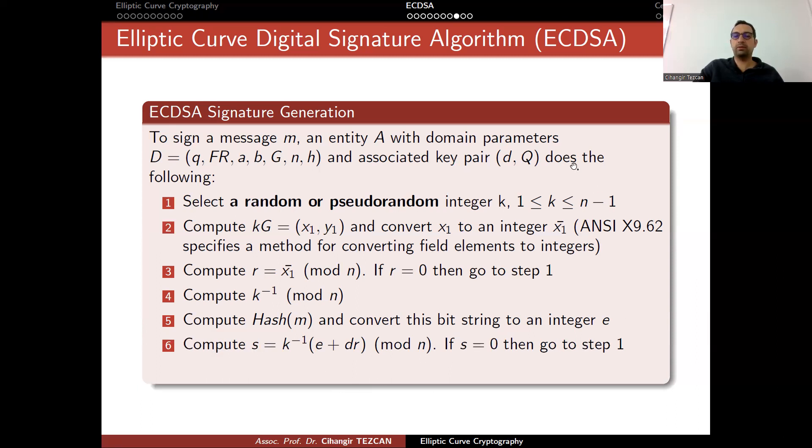If s is zero, then you have to repeat this process. If it is not, recall that now you obtained two different values r and s. Actually, this is your signature for the message m. It looks very similar to digital signature algorithm. But this time, operations are performed on elliptic curve points. This is why you have to convert the field elements to integers and so on.